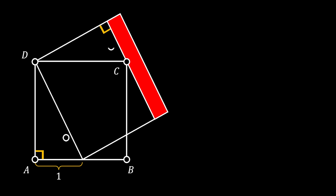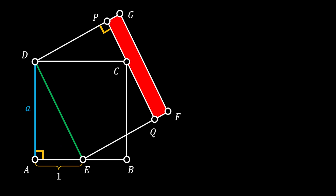We're going to do the same thing for our bigger square and mark those vertices as E, F, and G. Now let's also mark the remaining two vertices of our rectangle as P and Q. Let's start with the side of our smaller square and mark it as 'a', and the side of our bigger square as 'b'.